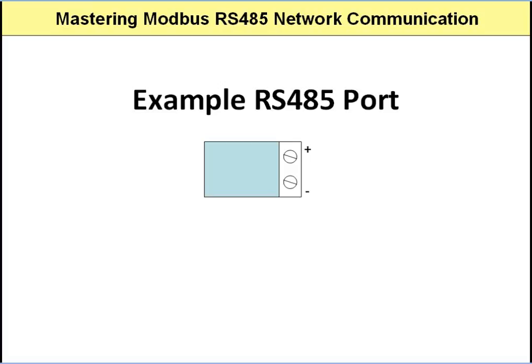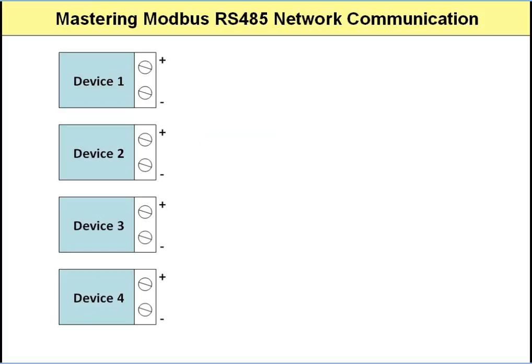Devices connected into an RS-485 network are always connected in what is referred to as a multi-drop arrangement. Let's look at what this is using an example. This diagram shows four devices that each have an RS-485 port — device 1, 2, 3, and 4.